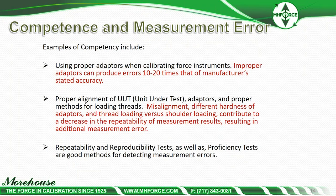Some examples of competence and measurement error. Improper adapters can produce errors 10 to 20 times that of the manufacturer's stated accuracy. Proper alignment of the unit under test, adapters, and proper methods for loading threads — misalignment and different hardness of adapters — all contribute to a decrease in repeatability and additional measurement error. Repeatability and reproducibility tests as well as proficiency tests are good methods for detecting measurement errors.